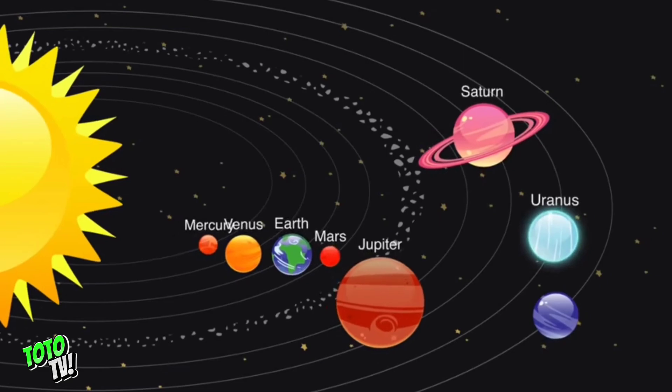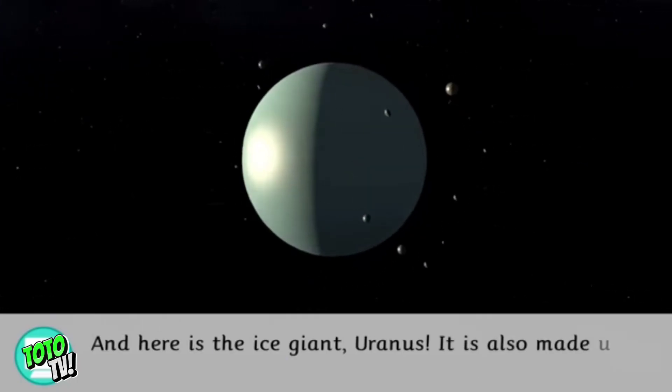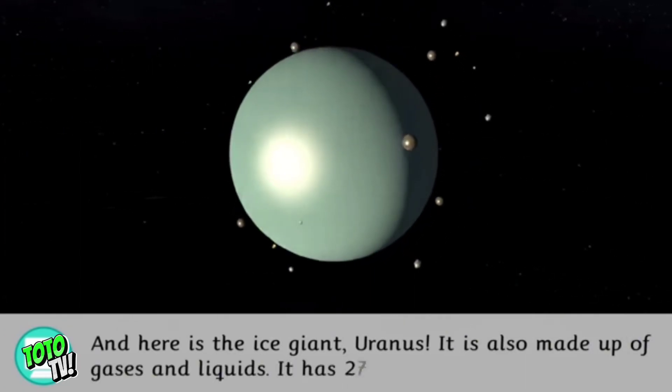And here is the ice giant Uranus. It is also made up of gases and liquids. It has 27 moons.